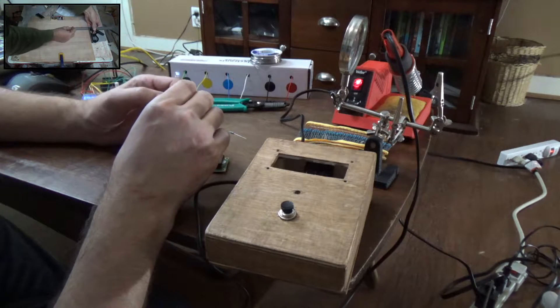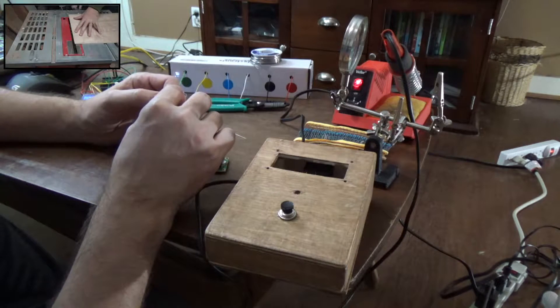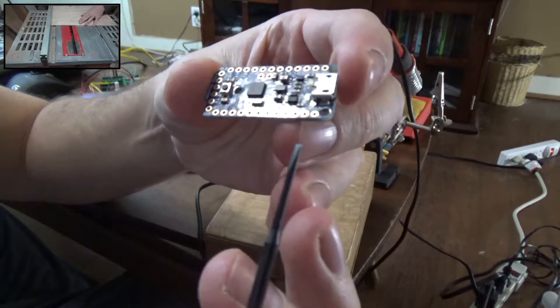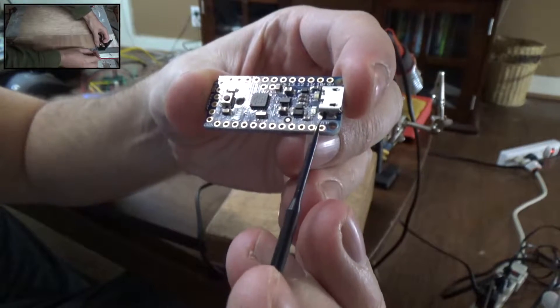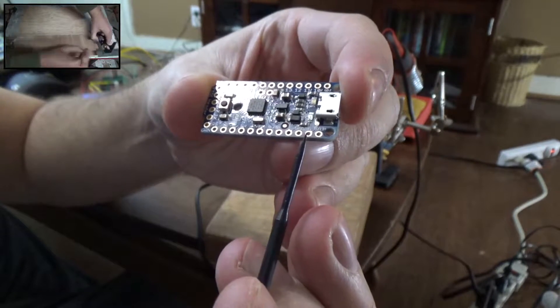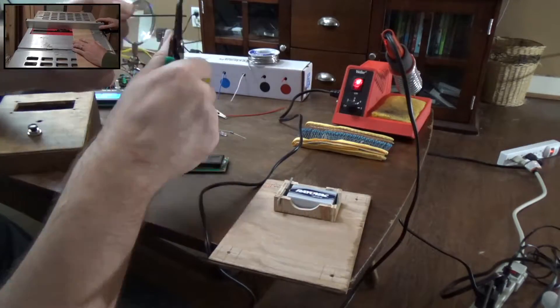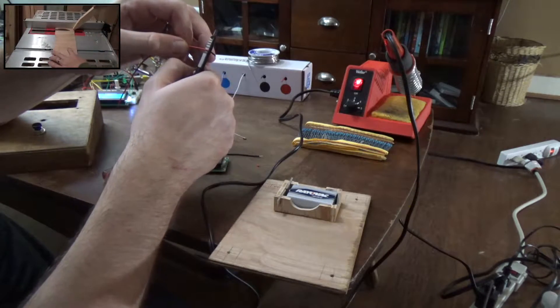The first thing I want to do is connect the positive and ground to the battery, which is right here on the Arduino. Battery positive and ground. I'm going to solder a red wire and a black wire. This wire is 22 AWG solid core, which is a little bit more expensive.